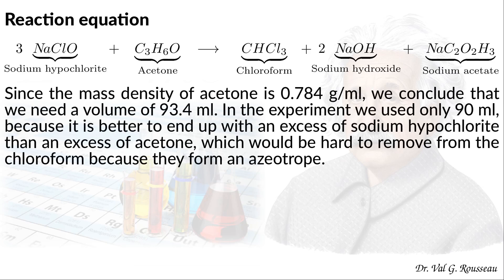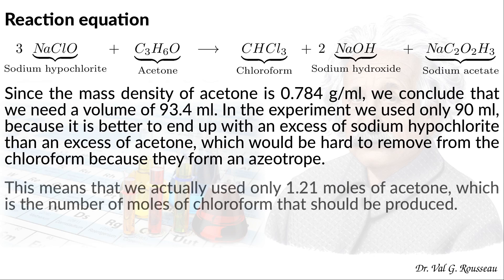Indeed, acetone forms an azeotrope with chloroform, so it would be hard to separate them at the end of the reaction. This means that we actually used only 1.21 moles of acetone and this is the number of moles of chloroform that should be produced.